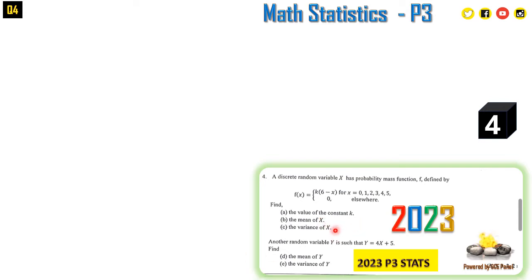b) the mean of X, c) the variance of X. In the second part of the equation, we are told that another variable Y is such that Y = 4X + 5. Find the mean and the variance of Y. This question is very cheap, and questions like this you are supposed to clear all the marks without leaving anything on ten.